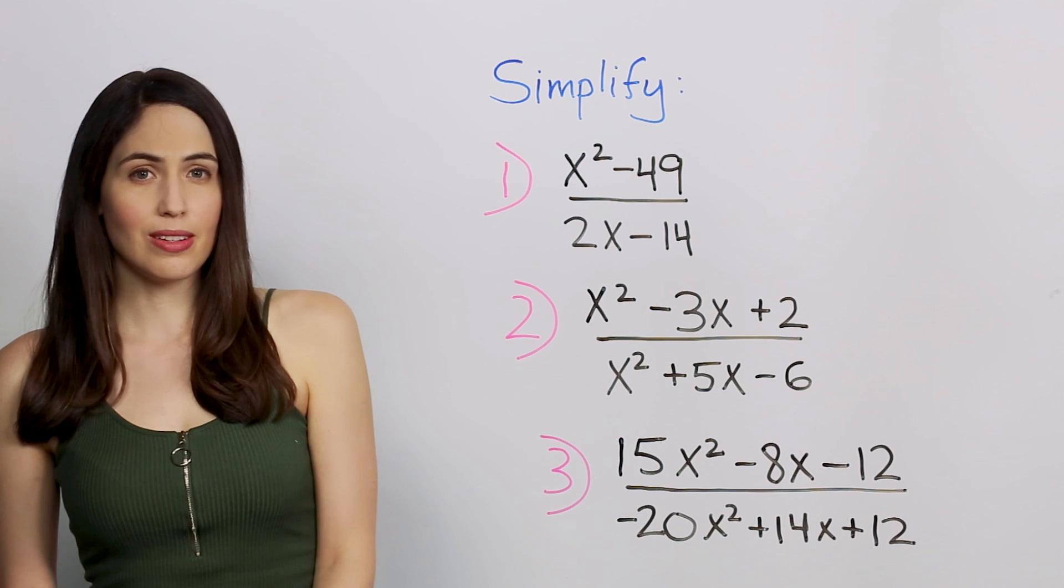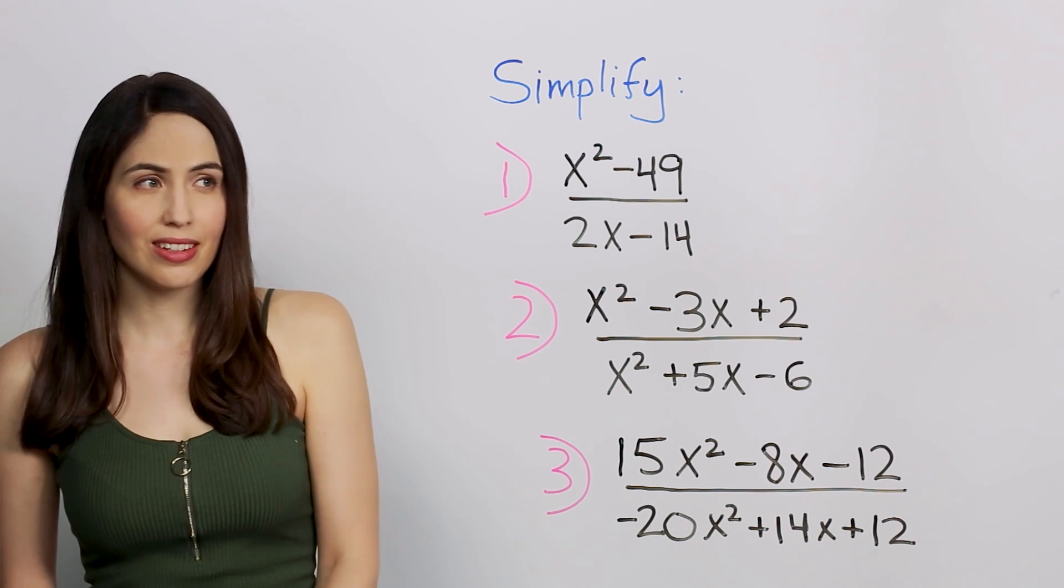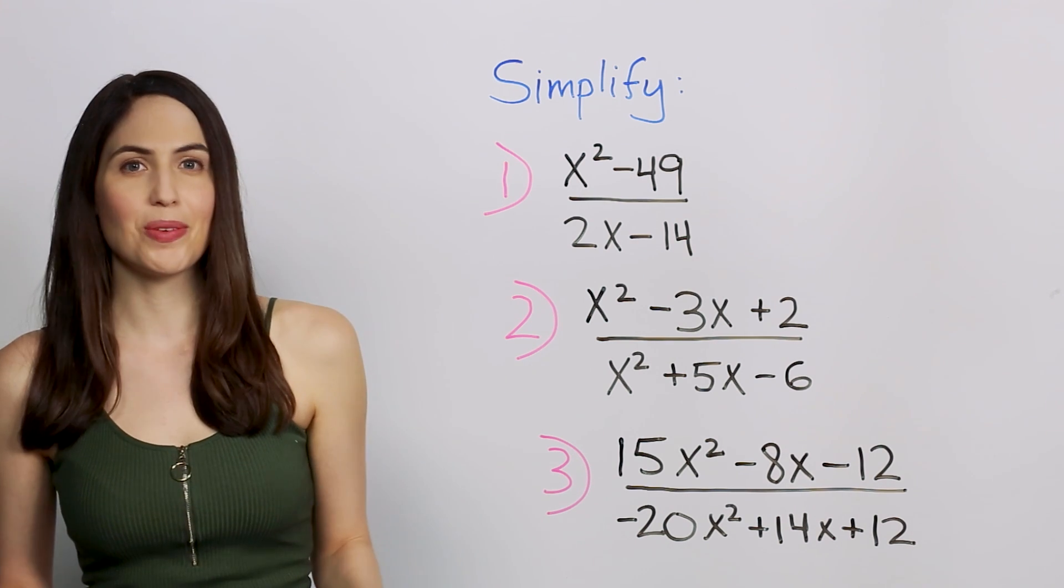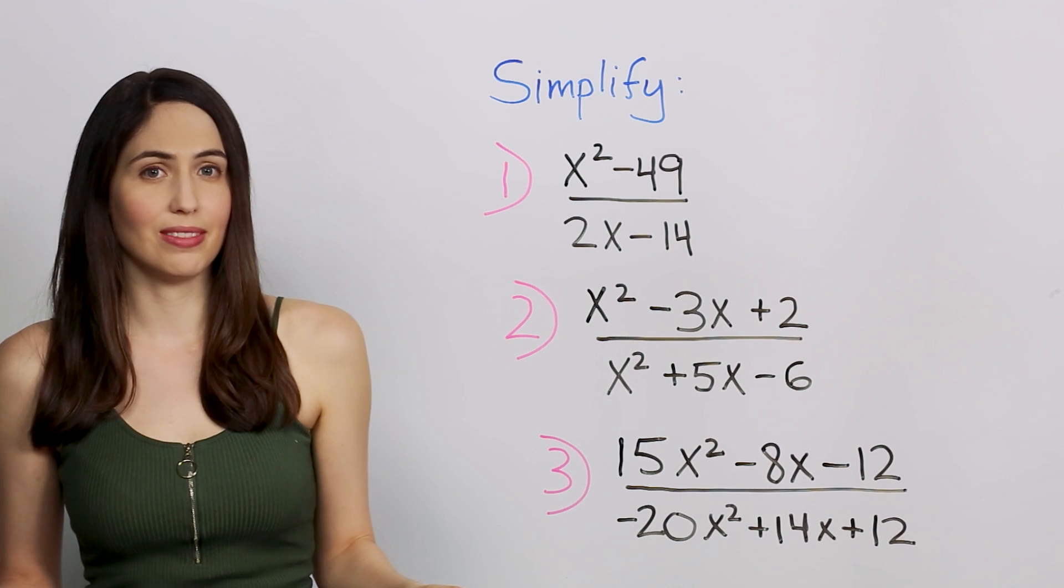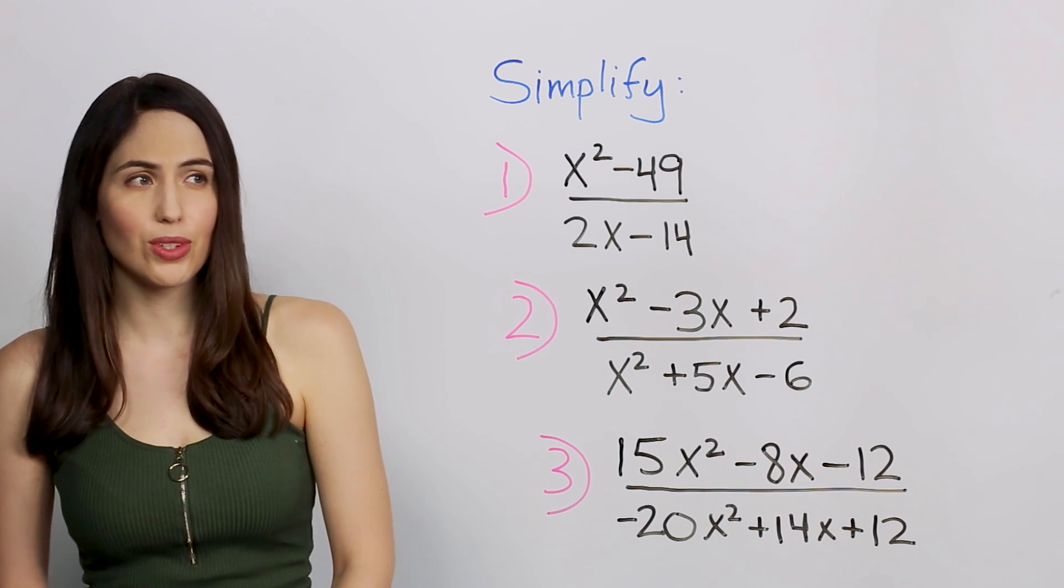Like these. And all we're going to do to simplify is factor as much as we can, top and bottom, cancel what we can, and then it's simplified. Pretty simple to simplify.